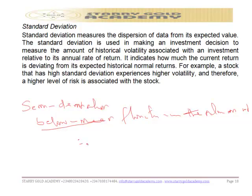So that is semi-deviation and standard deviation. Standard deviation is used to find the dispersion from the average or expected value. For those interested only in losses and not gains — those above the mean are gains, those below the mean are losses — it is semi-deviation that considers the below-mean fluctuation in the return on investment.